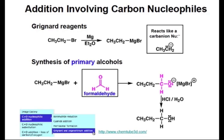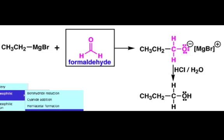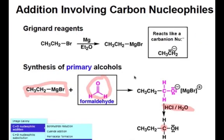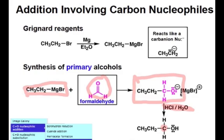An example of the addition of a Grignard reagent to a carbonyl compound is shown here. In this example, formaldehyde, CH2O, is treated with ethyl Grignard. The product that results after treatment with acid is a primary alcohol in which the carbonyl carbon has become the primary alcohol carbon in the product. Notice that the MgBr counter ion is now associated with the oxygen atom of the alkoxide, and that a new carbon-carbon bond has formed between the former carbonyl carbon and the former nucleophilic or anionic carbon.